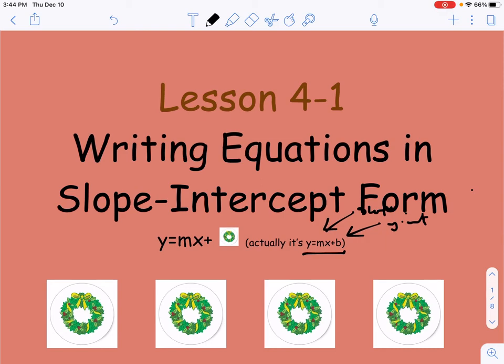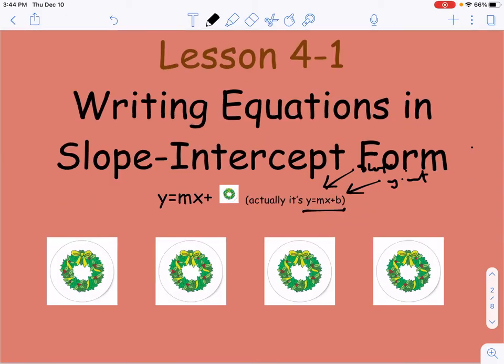But what we don't know is how to write these things if we don't have exactly those two things given to us. So what we're going to learn today is how to handle that when we have one of the things given to us or maybe when they don't give us either one. How can we use that to find those things and then finish writing this equation? We're going to jump in.